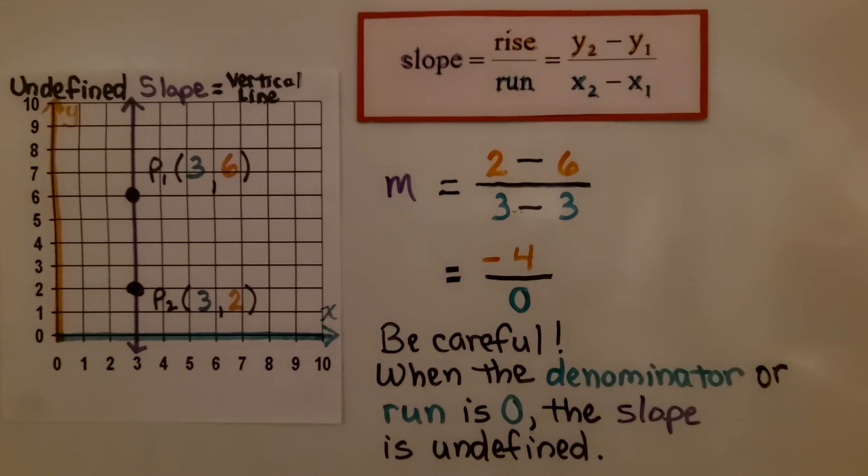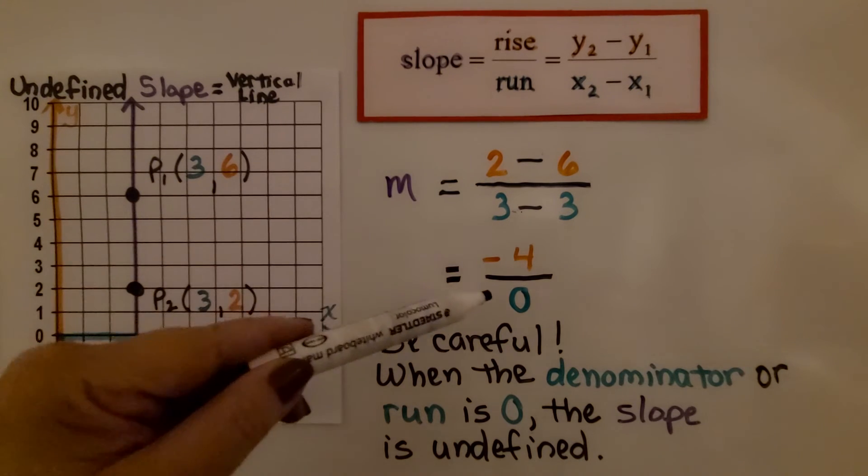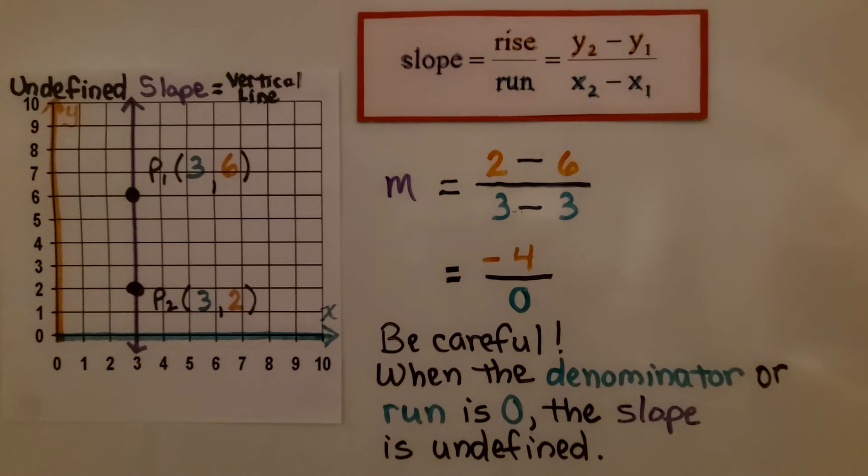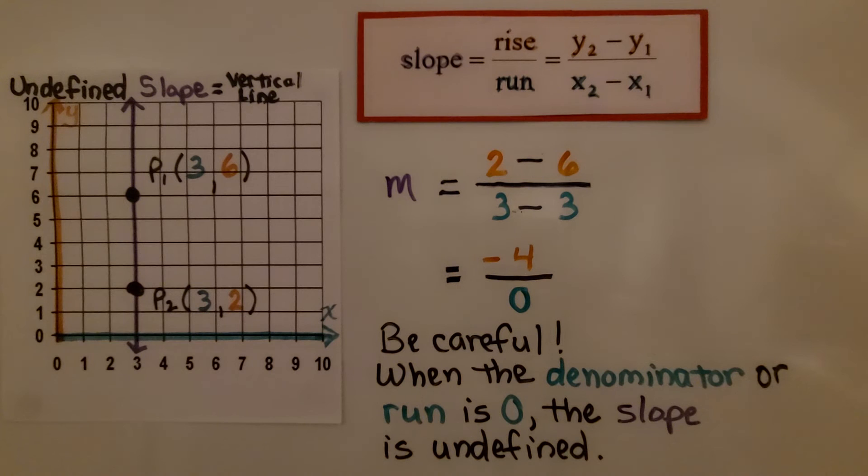Now I want you to remember to be careful because sometimes we have an undefined slope. That's when the line is vertical on the coordinate plane. When we use our slope formula for two points and we find our rise and our run, we have 0 for our run. So be careful. When the denominator or run is 0, the slope is undefined. We can't have a 0 denominator. It's undefined.